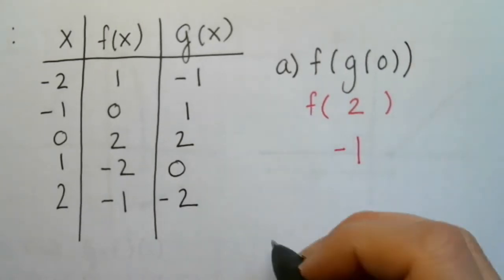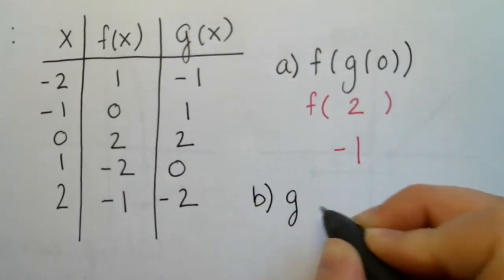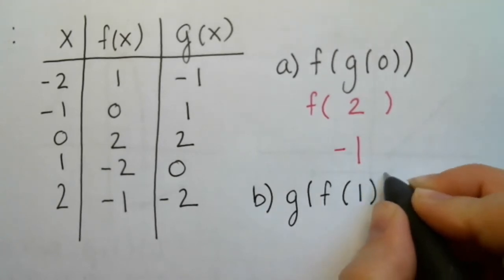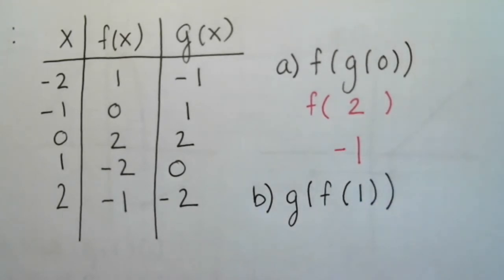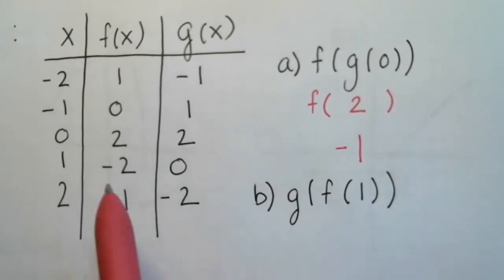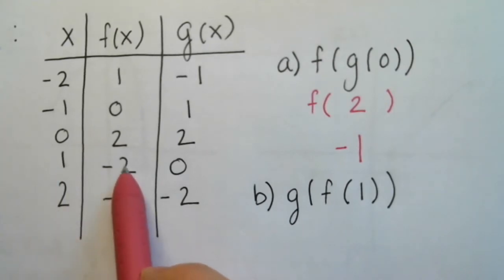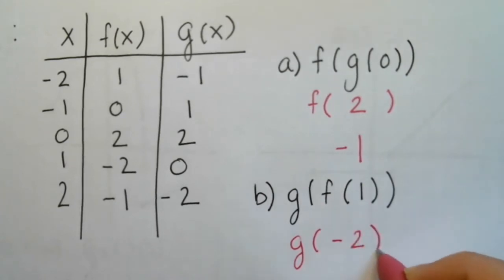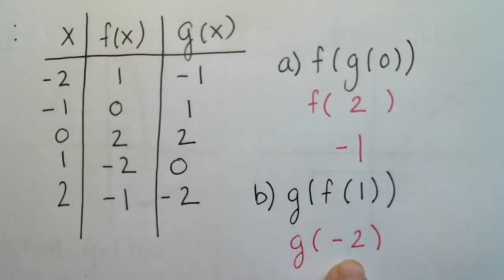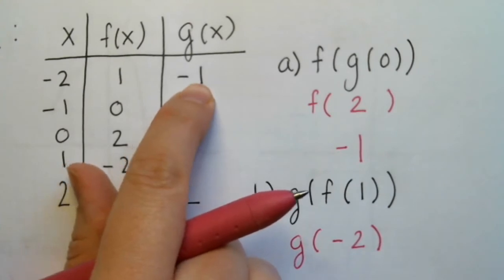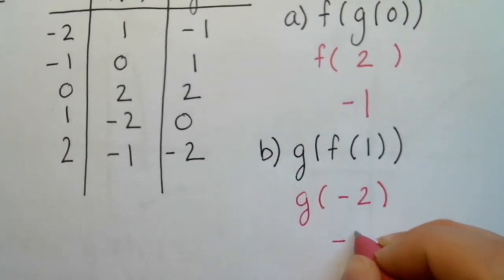Now let's evaluate g of f of 1. We plug in 1 to f first: f of 1 is negative 2. Then we evaluate g at our answer, negative 2. At negative 2, g of x is negative 1. So my answer is negative 1.